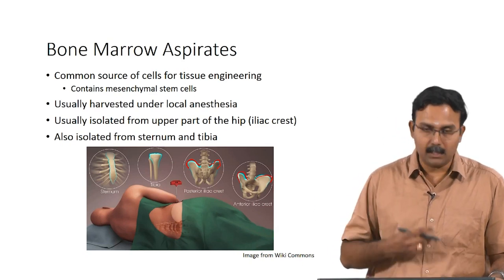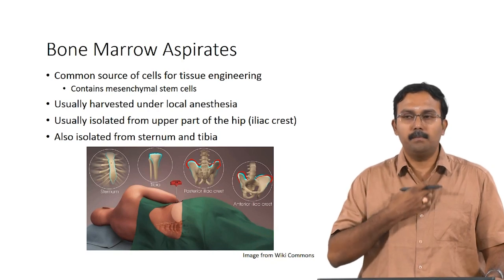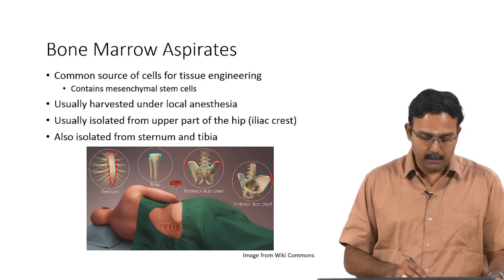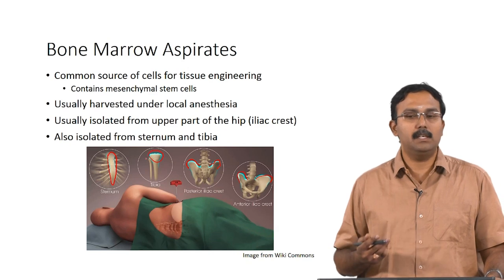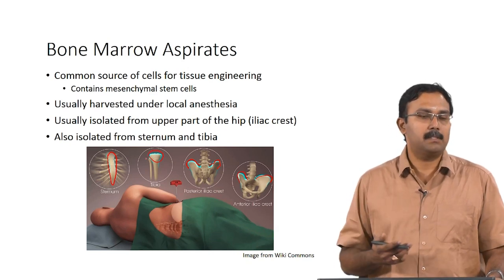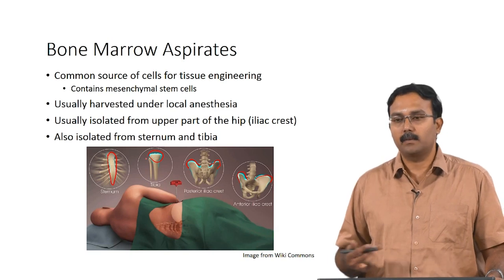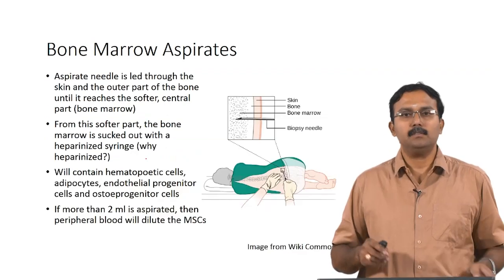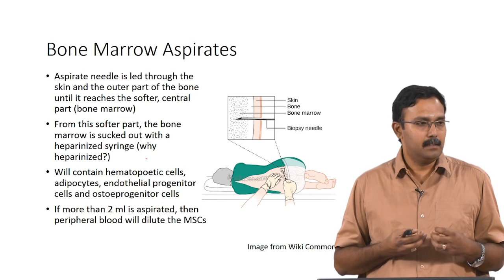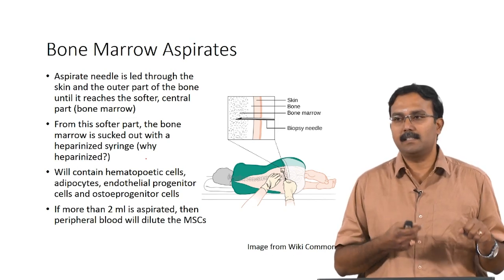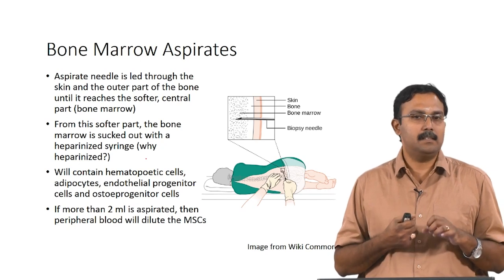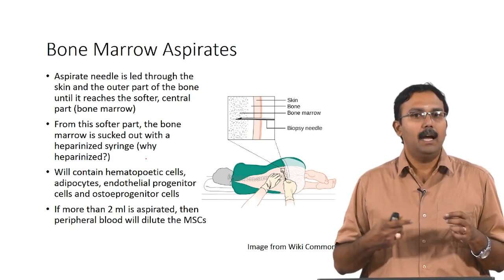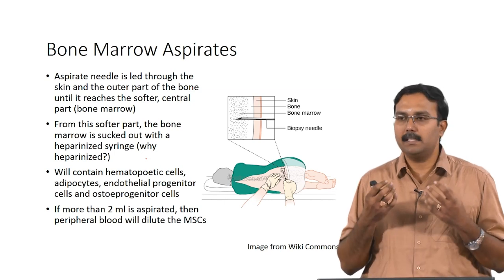The iliac crest is the most common tissue from which you try to harvest. What you do is use an aspirate needle — these are large needles, maybe 16 gauge — which are penetrated through the skin and through the outer hard part of the bone, reaching the softer central part which contains the bone marrow. This is a painful procedure, which is why local anaesthesia is required.